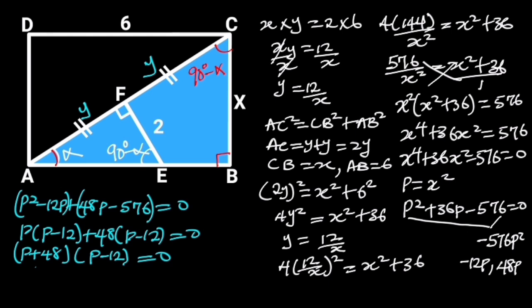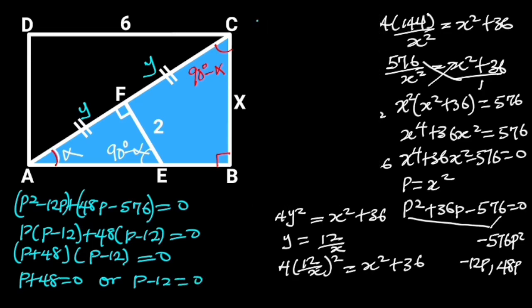If P plus 48 times P minus 12 is equal to 0, it follows that P plus 48 is equal to 0 or P minus 12 is equal to 0. If P plus 48 is equal to 0, then P is equal to minus 48. And if P minus 12 is equal to 0, then P is equal to 12. Since X must be greater than 0, then we take P is equal to 12 as our solution.